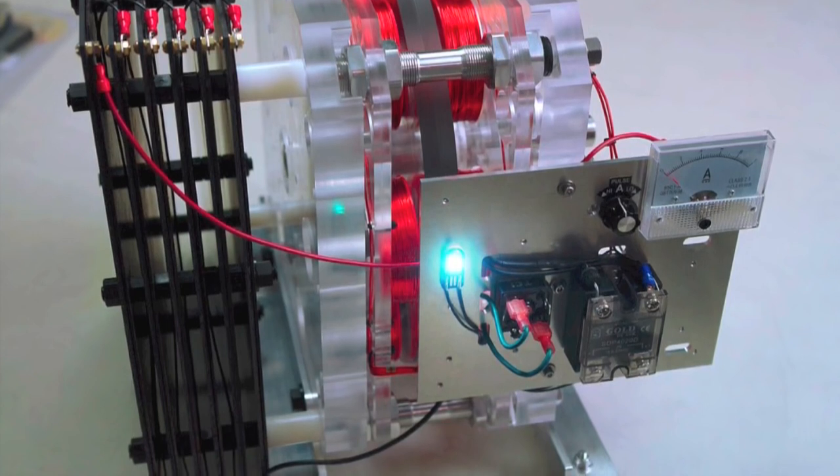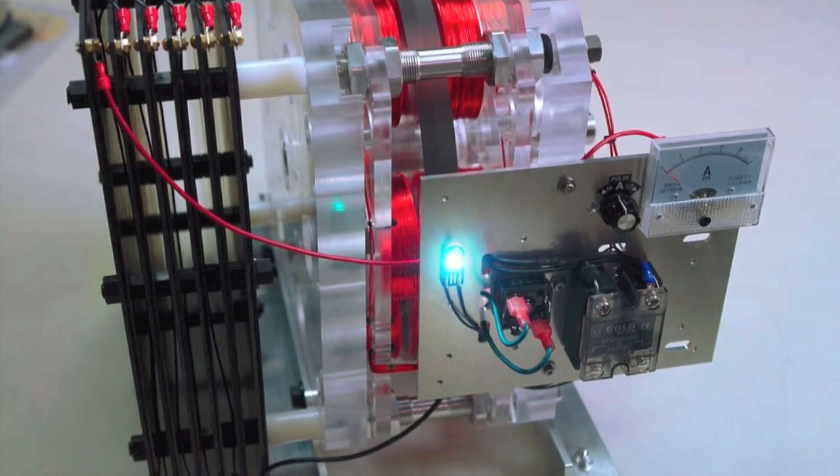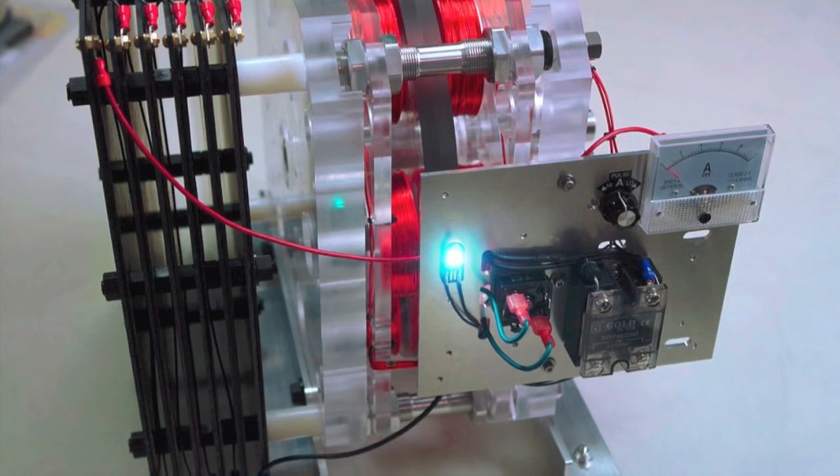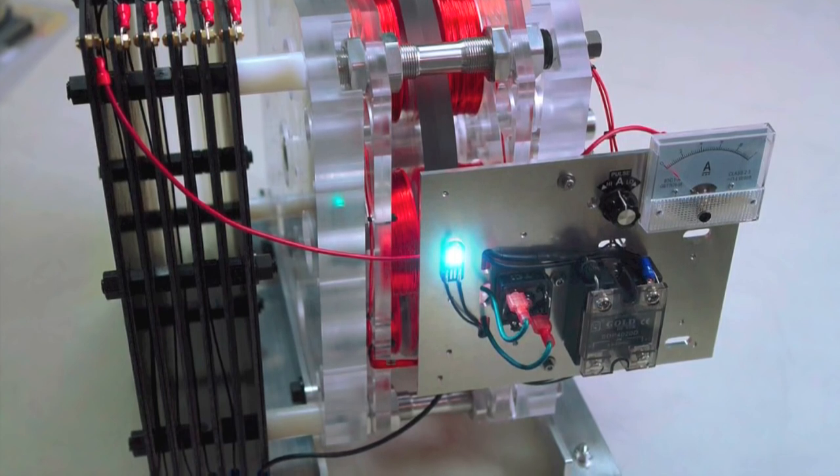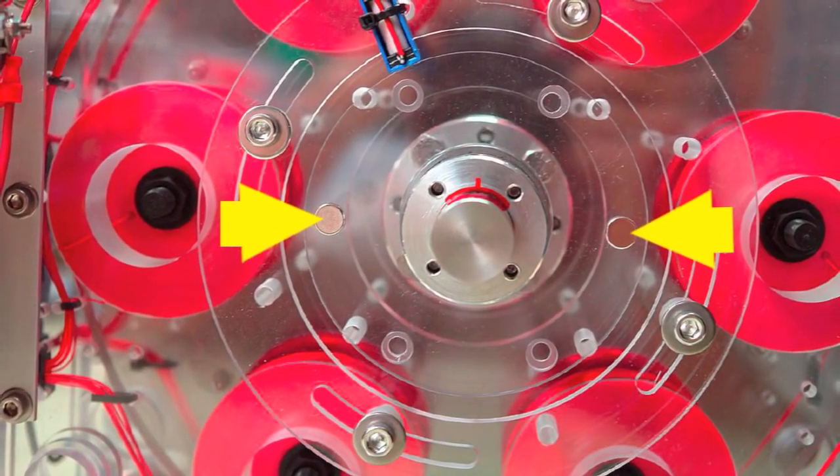But it does show a high intensity USB LED light which operates off of the collapsing field of the coils and inductance as well, depending on how many times you pulse it per revolution.